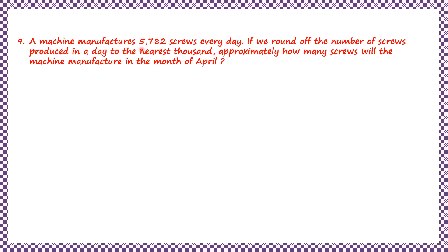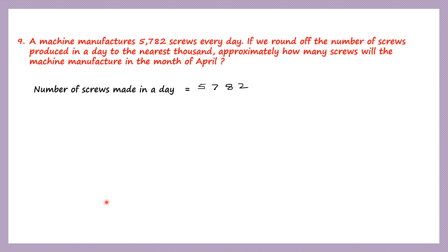Question 9. A machine manufactures 5,782 screws every day. If we round off the number of screws produced in a day to the nearest thousand, how many screws will the machine manufacture in the month of April? Number of screws made in a day: 5,782. Rounding to the nearest thousand, we underline the digit in the thousands place, which is 5. The digit to its right is 7, which is more than 5, so the underlined digit changes to 6. That gives us 6,000.